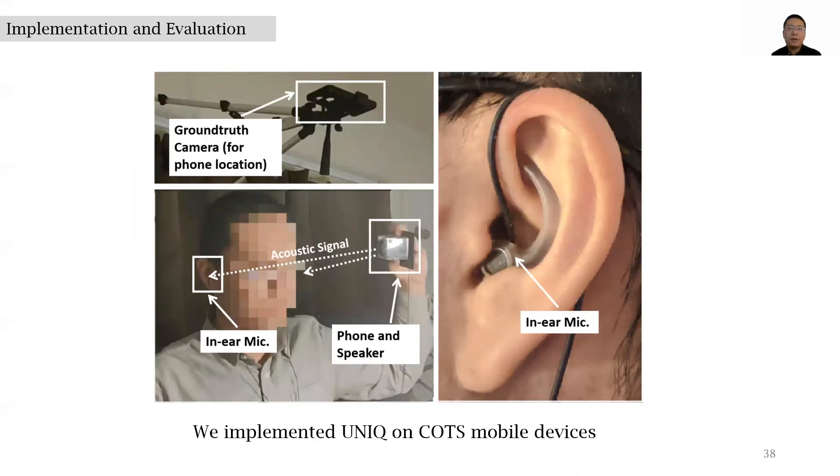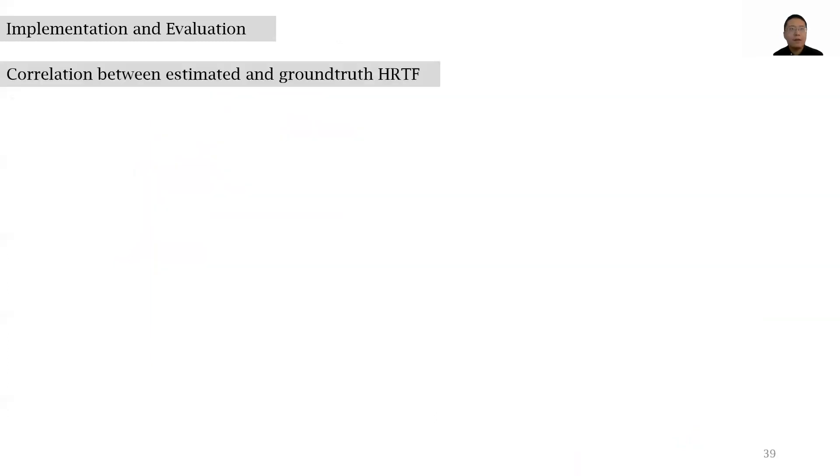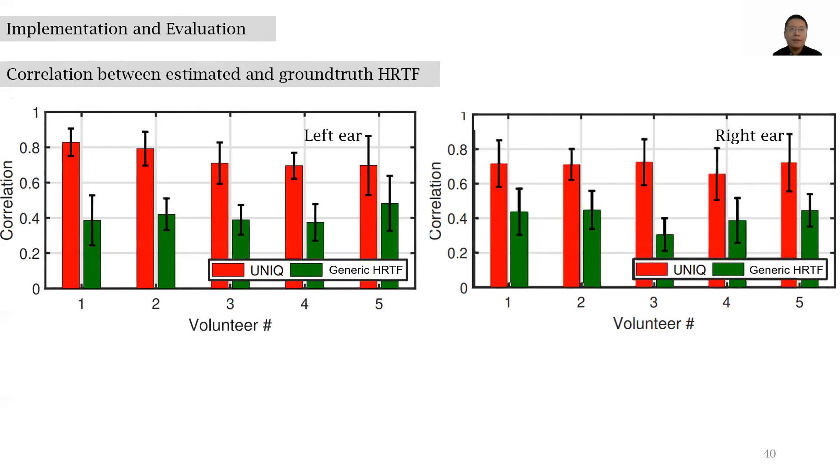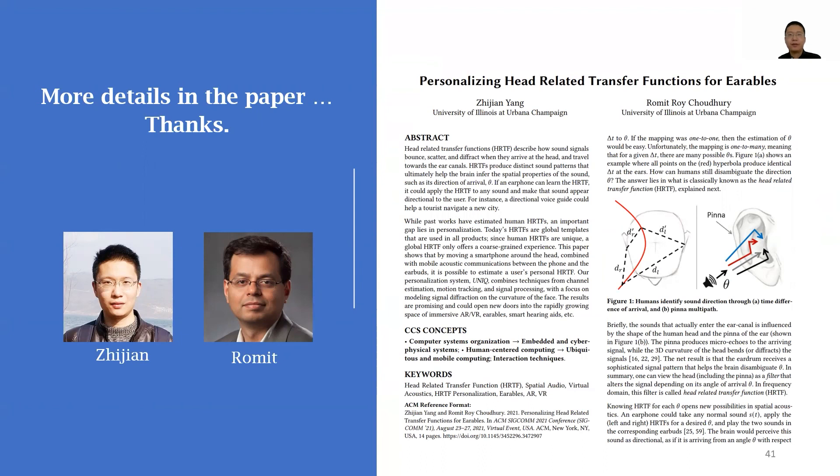We implement UNIC on commercial off-the-shelf mobile devices, including a smartphone speaker and in-ear microphone. And we evaluate on the correlation between the estimated and ground-truth HRTF. Let me first show the baseline results. This is the correlation between the generic HRTF and the ground-truth HRTF. We can see that the correlation is low. And this is the result for correlation between UNIC estimated HRTF and the ground-truth HRTF. We can see that UNIC generates HRTF 1.8 times more accurate than the generic HRTF.